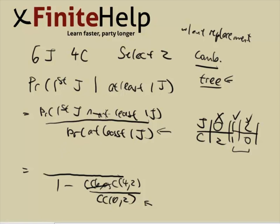First, you can see that if first is jazz, then you have at least one jazz. So the second part is actually redundant; you can ignore it. This is not always the case, but in this case it is. The first is jazz—you have ten CDs to choose from. The chance that first is jazz is going to be 6/10. That's it.